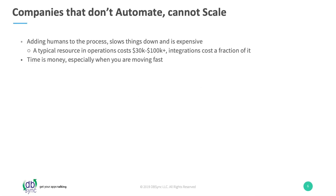Now that we've taken a look at the demo, I want to reiterate a couple of main points about DBSync. The core concept is this: adding humans to any process slows things down and is very expensive, so our goal is to automate away that extra cost. A typical resource in operations to do something like this yourself is anywhere between $30,000 to $100,000. Using pre-built integrations costs just a fraction of that. Time is money, especially when you're moving fast.